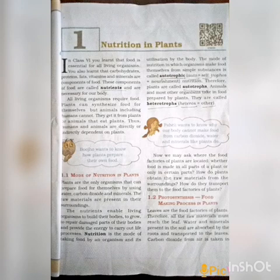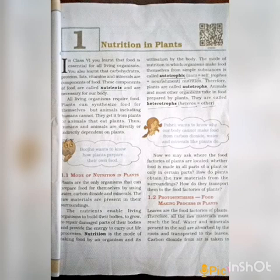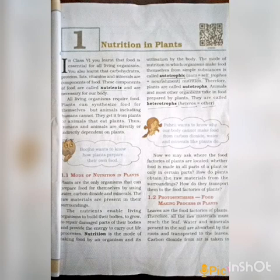Nutrition in plants is divided into two main groups — the mode of nutrition. One is autotrophic and another one is heterotrophic. Autotrophic: 'auto' means self, 'troph' means nourishment. The type of nutrition where organisms make their food on their own is called autotrophic. The best example is plants.